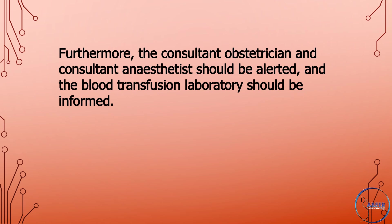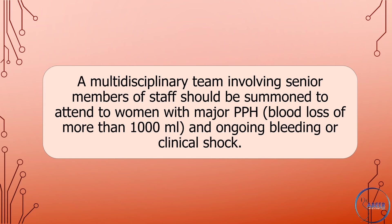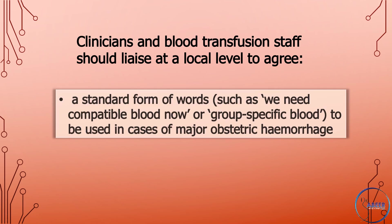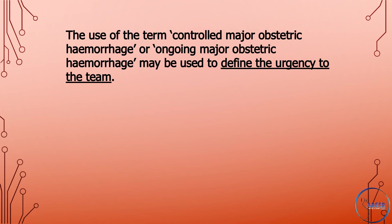Furthermore, the consultant obstetrician and consultant anesthetist should be alerted and the blood transfusion laboratory should be informed. One member of the team should be assigned the task of recording events, fluids, drugs, blood and components transfused, and vital signs. A multidisciplinary team involving senior members of staff should be summoned for women with major PPH or blood loss of more than 1,000 milliliters with ongoing bleeding or clinical shock. Clinicians and blood transfusion staff should liaise locally to agree standard terminology such as 'we need compatible blood now' or 'group-specific blood,' and a timescale for delivering various blood components. The terms 'controlled major obstetric hemorrhage' or 'ongoing major obstetric hemorrhage' may be used to define urgency to the team.